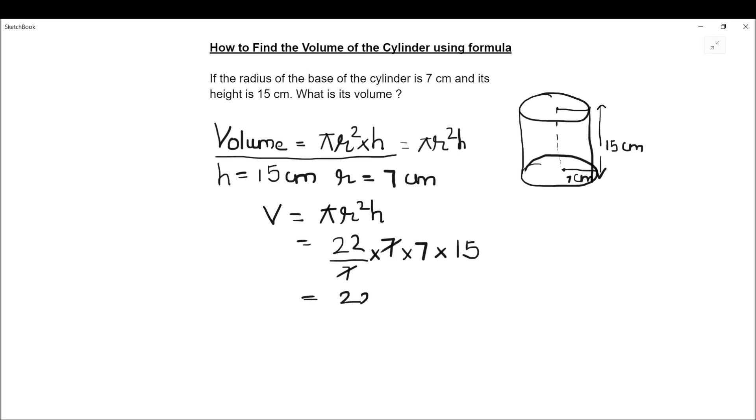So we are left with 22 times 7 times 15, and as it is volume it is going to be in cubic centimeters because we have r² and h. So we have a square centimeter multiplied by a centimeter, giving us cubic centimeters.